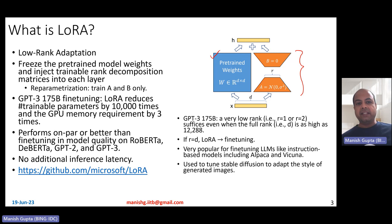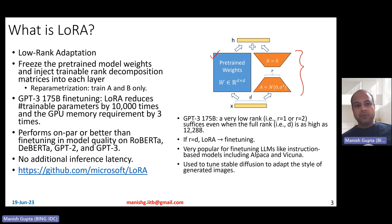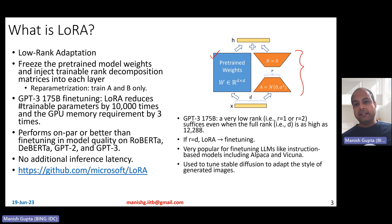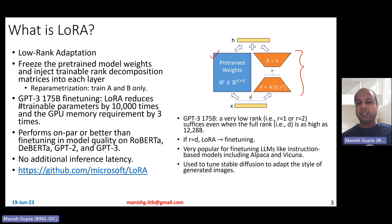You freeze the pre-trained model weights and inject trainable rank decomposition matrices into each layer. Wherever you have a weight matrix, you have these A and B matrices alongside — shown in orange. You've re-parameterized the overall update to keep W frozen while only updating A and B. This is a very powerful although super simple idea. For GPT-3 with 175 billion parameters, LoRA actually reduced the number of trainable parameters by 10,000 times and the GPU memory requirements by three times.